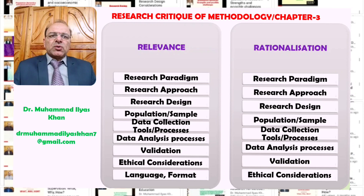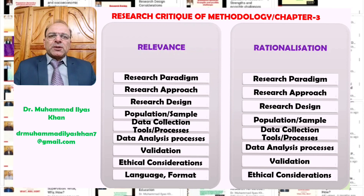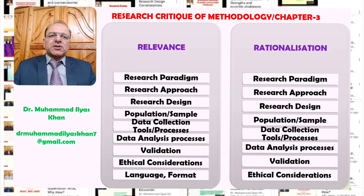Some of the main concepts inside the methodology chapter that the research critic looks at, in terms of relevance and rationalization, include the research paradigm, the research approach, the research design, the population and sample, the data collection tools and processes, the data analysis process, the validation process, and the ethical consideration processes. Most research critiques also look at the language, format, and presentation of the methodological part.